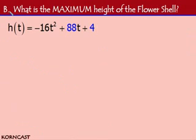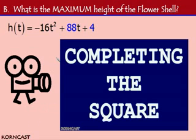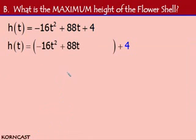Now to answer our next question. What is the maximum height of our flower shell? We now have an equation in standard form. And in order to find the maximum height, we must find the vertex. The vertex is where that maximum height can be found. So we must rewrite our equation that's in standard form into vertex form. And we must do that by completing the square. If you're unsure on how to complete the square, please watch the completing the square Korncast.